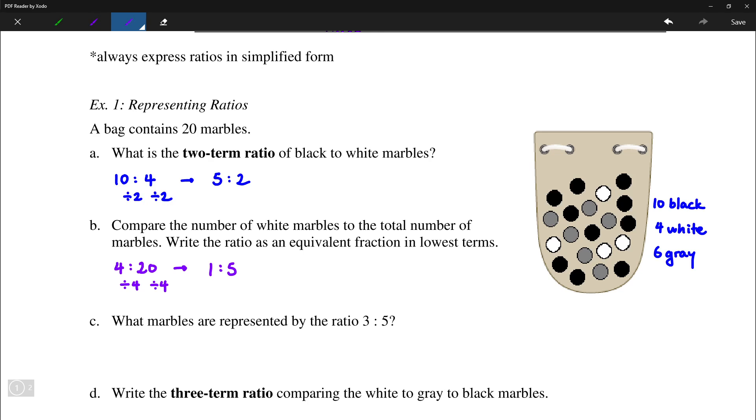Next up, what marbles are represented by the ratio of 3 to 5? So notice here we can multiply both of these numbers by 2. So we have 3 times 2 and also 5 times 2. So that will be 6 to 10, which we can recognize as the number of gray marbles to the number of black marbles.